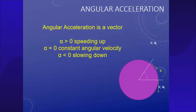Angular acceleration is a vector. We're not doing left, right, up, and down; we're doing clockwise and counterclockwise, or by angle. If the value for alpha is less than zero or negative, then the object is slowing down.